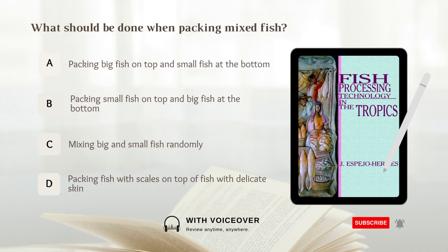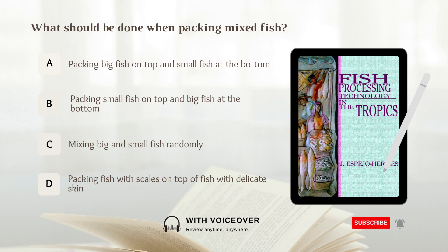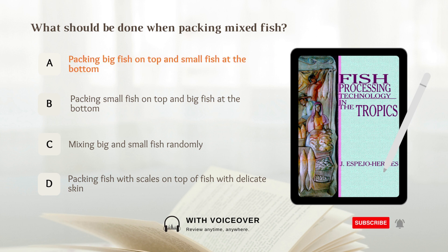What should be done when packing mixed fish? A. Packing big fish on top and small fish at the bottom. B. Packing small fish on top and big fish at the bottom. C. Mixing big and small fish randomly. D. Packing fish with scales on top of fish with delicate skin. Answer: A. Packing big fish on top and small fish at the bottom.